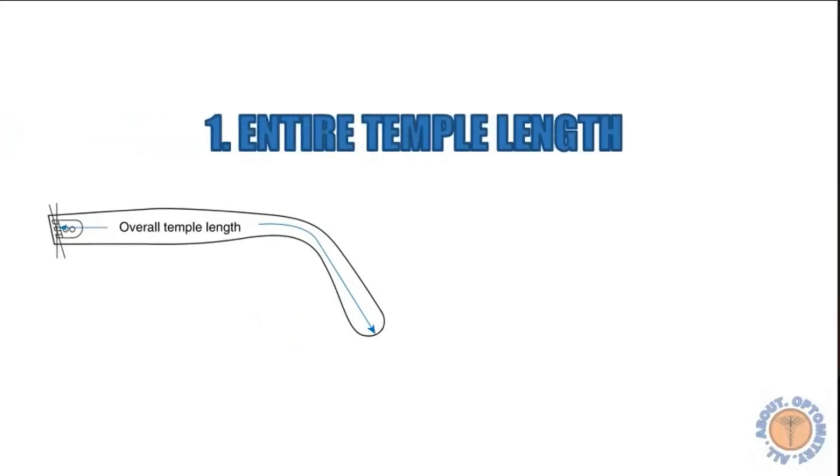So there are two general ways through which you can measure your temple length. The first method should indicate that the temple length is measured from the center of the screw hole till the end of the temple through the center of the temple and right across the bend.